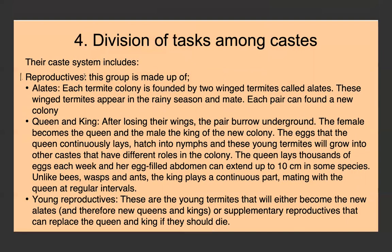Within the reproductive caste, we have the alates. Each termite colony is founded by two winged termites called alates, which appear in the rainy season, mate, and establish a new colony. After losing their wings, the pair burrows underground — the female becomes the queen and the male the king of the new colony. The eggs the queen continuously lays hatch into nymphs, which will grow into other castes with different roles.